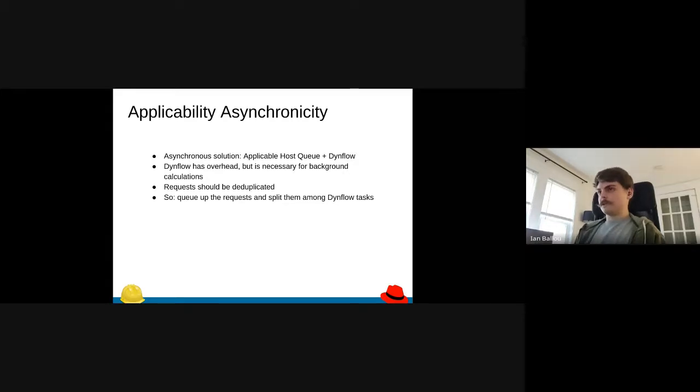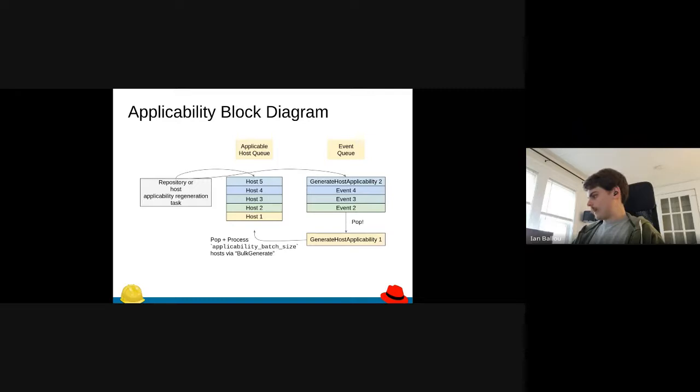I will show you what this looks like on this next page. We have a block diagram here of how the applicability action works. Essentially the order of operations here is we have a repo or a host applicability regeneration task come in. The task will pop one host if it's just a single host applicability task, or a whole bunch for the repository, and that will fill up the host queue. Then we'll also pop on an event onto the event queue, and that event is what triggers the Dynflow tasks to actually do the applicability calculations.